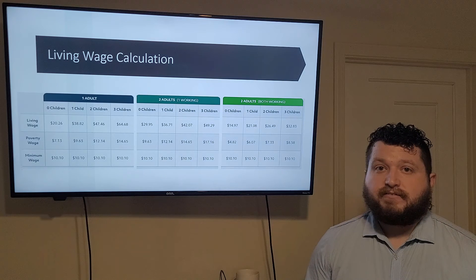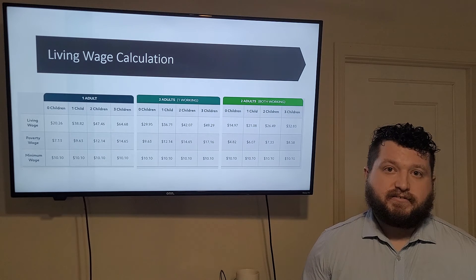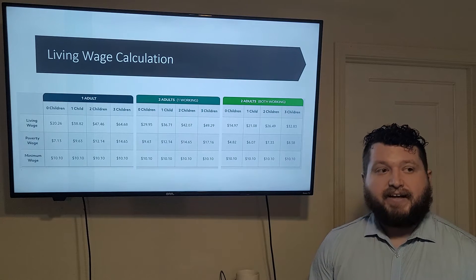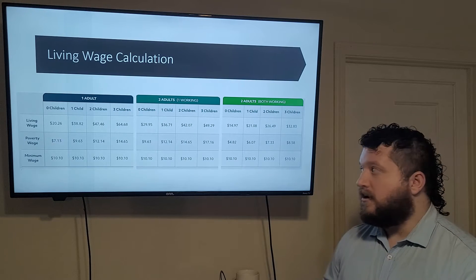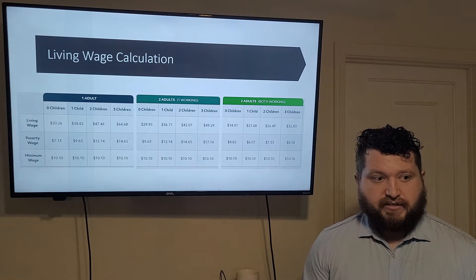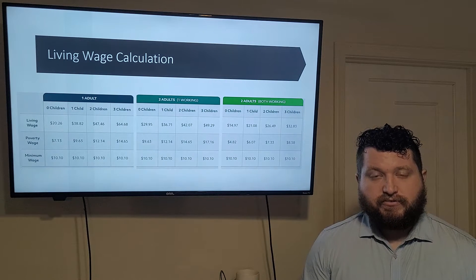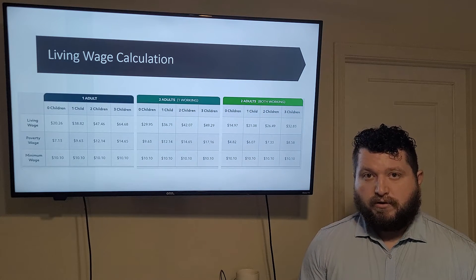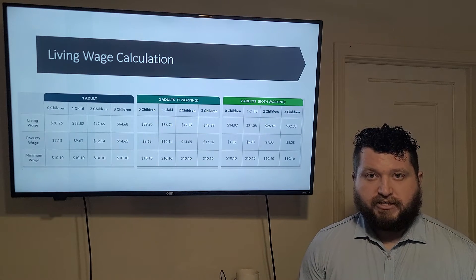Two working adults, if you've got two working adults and no children you are still not making a living wage on minimum wage. If both of you work 40 hours a week at minimum wage you still fall three dollars an hour below a living wage in the state of Hawaii.